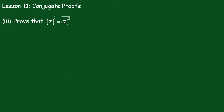And in this one we have to show the square of the conjugate is equal to the conjugate of the square. So we'll let Z equal A plus iB, so the conjugate is equal to A minus iB. Now we'll square the conjugate.